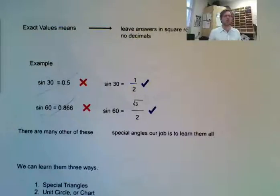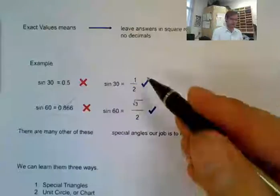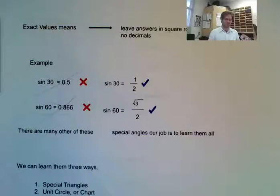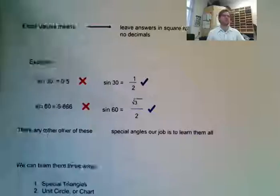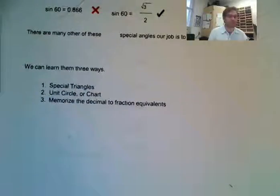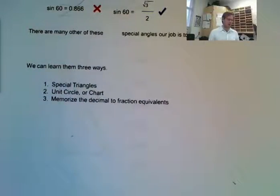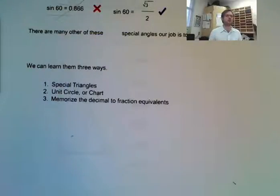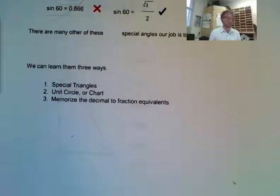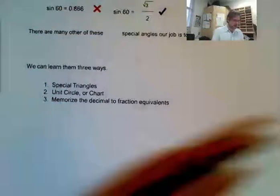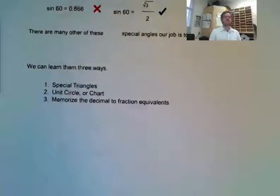There are many exact values or special angles, and it's our job to learn them all. By the end of this class, you will know them all. There are three ways of learning them. One is the special triangles. Another one is using a unit circle or chart. And number three is to memorize the decimal-to-fraction equivalents for all of them. I'm going to first start off with the special triangles.